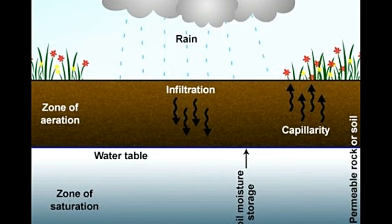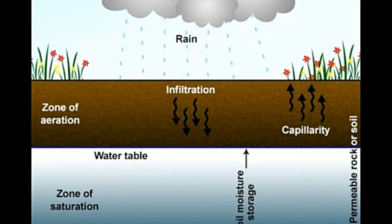By definition, the zone of saturation is a layer of permeable rock in which the cracks and pores are completely filled with water. As rainwater keeps penetrating the soil under the influence of gravity through the pores of the aeration layer, it finally reaches the impermeable layer deep below the earth's surface. The composition of this layer is such that further penetration is restricted and water is effectively trapped inside the pores of the rocks present there. As more and more water percolates down from the aeration layer to the impermeable layer, over a period of time, the accumulated water saturates all the pores up to a certain height above the impermeable layer, forming a new zone where all the pores are completely filled with water — known as the zone of saturation.